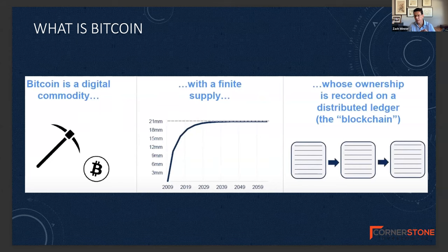Over 90% has already been produced, and the remaining 10% will be produced over the next 118 years. One of the other unique things about Bitcoin is the ownership is recorded on a distributed ledger called the blockchain — computers around the world that share that same ledger, verifying all of the transactions. This helps secure the network and prevent fraud.